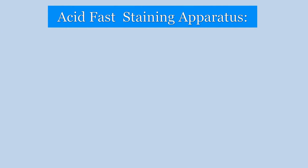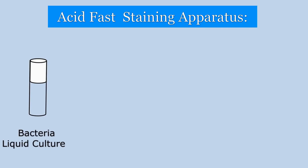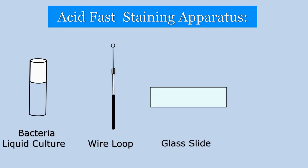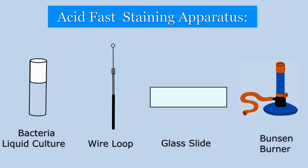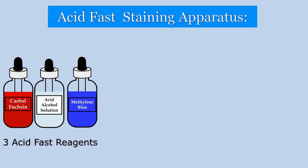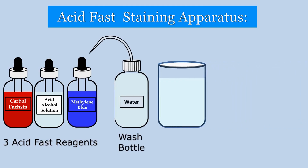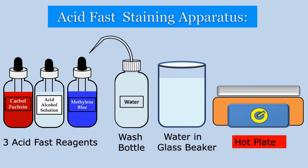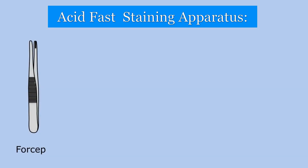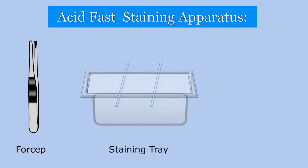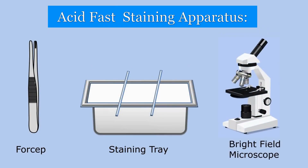We need bacterial suspension, a sterile wire loop, a clean glass slide, and a Bunsen burner. We also need three different acid-fast reagents: carbolfuchsin, acid-alcohol solution, and methylene blue. Additionally, we need a wash bottle, a glass beaker with water, a hot plate to boil water, forceps, a staining tray, and finally the most important instrument — the microscope.